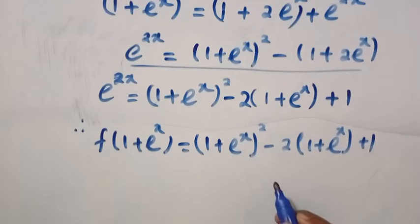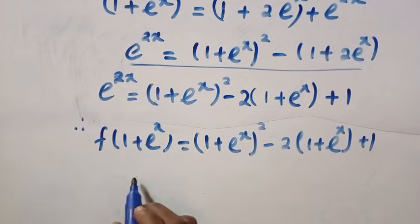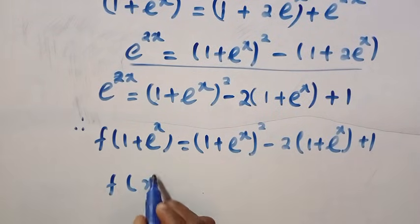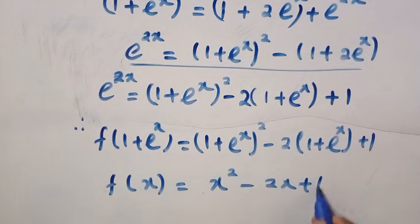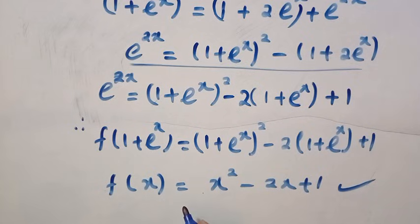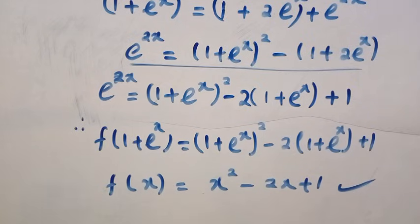Changing every instance of 1 plus e to the power of x to x, we get f of x equals x squared minus 2x plus 1. Just as simple as what we got from the first method — very tricky, but very straightforward. This is how to solve this problem. Thanks for watching, and see you in the next video. Never stop learning. Bye-bye.